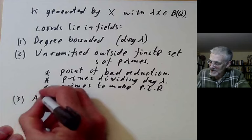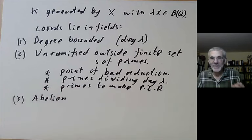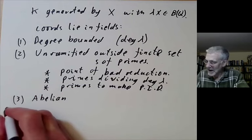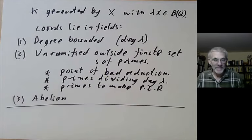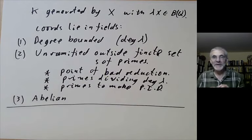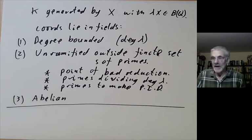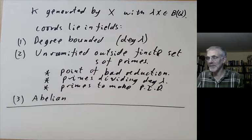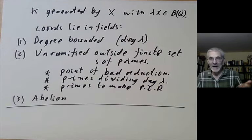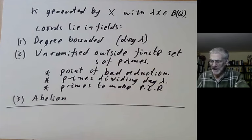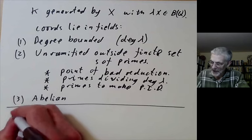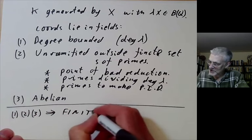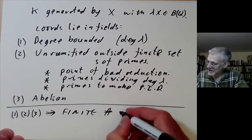Thirdly, these extensions are abelian. In fact, the Galois group turns out to be a subgroup of the additive group of the elliptic curve. If you take these conditions to your friendly neighborhood algebraic number theorist, they will get very excited and give you a long explanation involving class field theory of how there are only a finite number of fields with these properties. In fact, they will list them all for you. In fact, you don't really need class field theory. 1, 2 and 3 imply a finite number of fields, which you can just do using Kummer theory.